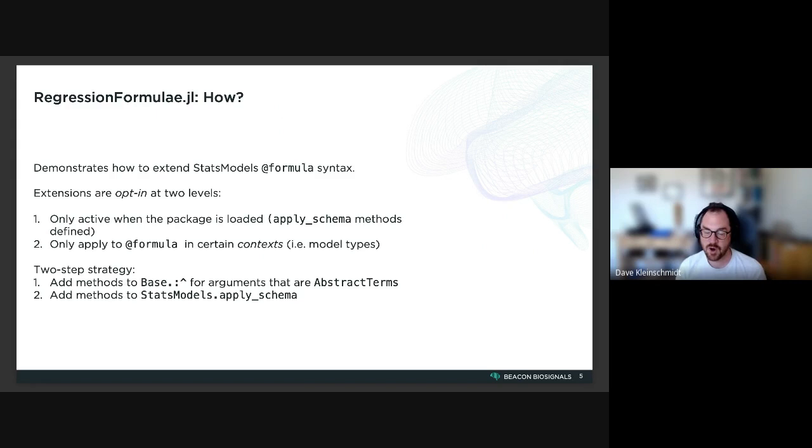For arguments that are AbstractTerms. And this is type piracy because, well, it's sort of light, maybe friendly type piracy because we are adding methods for terms that are defined outside of base for a base method. And then the second step is to add methods to the StatsModels apply_schema function.